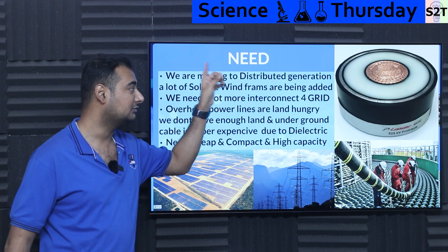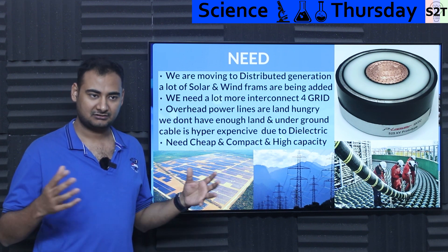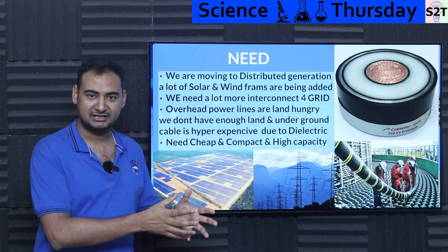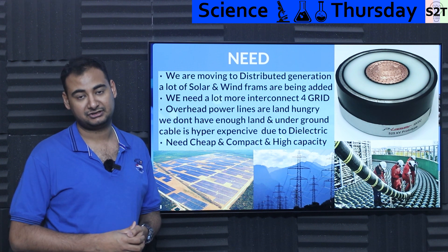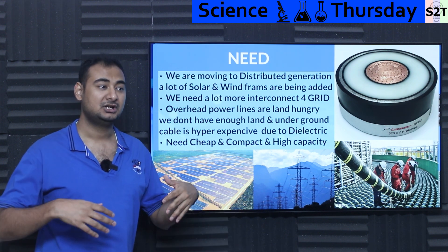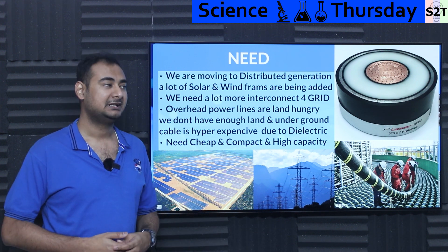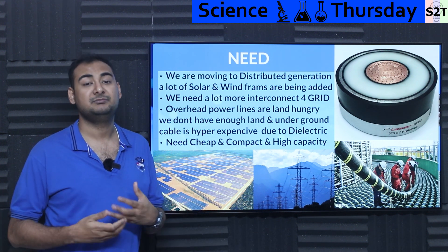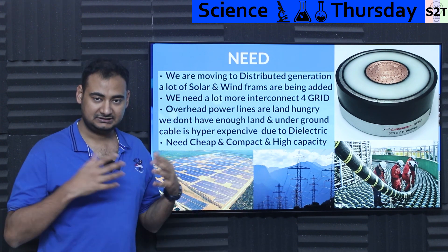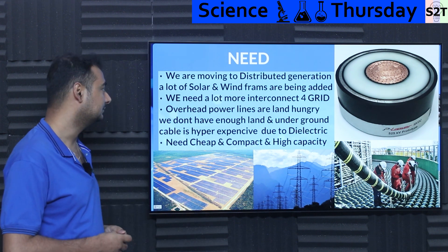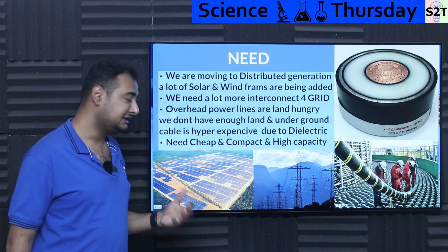We are moving to what we call distributed generation. Back in the early 1900s, we built our power structure on the simple logic of having big power plants and then distribution — done. Now we have distributed generation, meaning you can literally have multiple solar farms spread in the middle of nowhere, and you have to carry gigawatts of power from A to B. Our grid was not built for that. We are adding a lot of solar power and wind power.